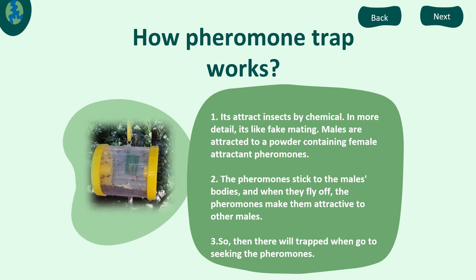The pheromone trap works by attracting insects with chemicals. Males are attracted to a powder containing female attractant pheromones. The pheromones stick to the male bodies and when they fly off, the pheromones make them attractive to other males. So then, they will be trapped when they go seeking the pheromones.